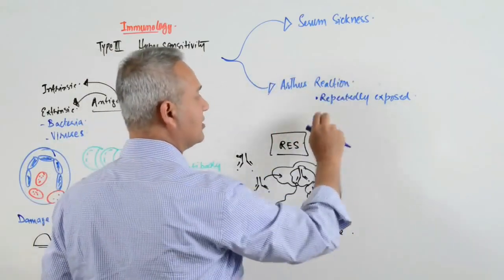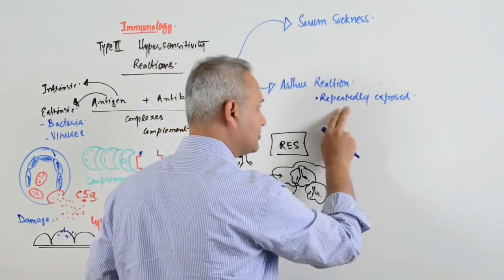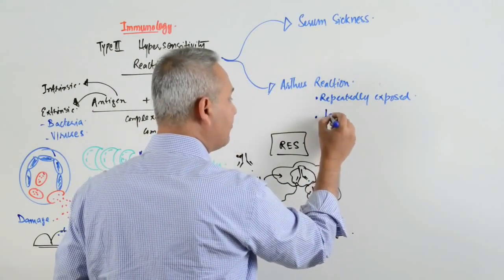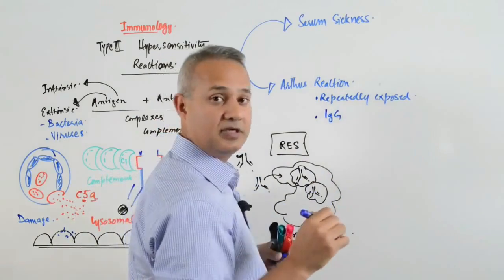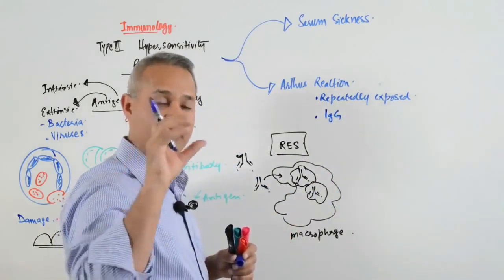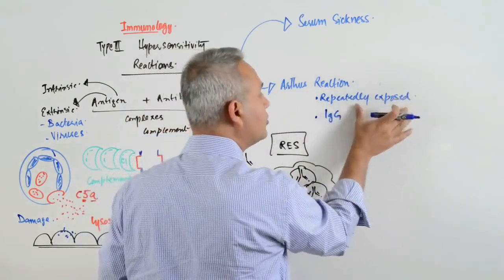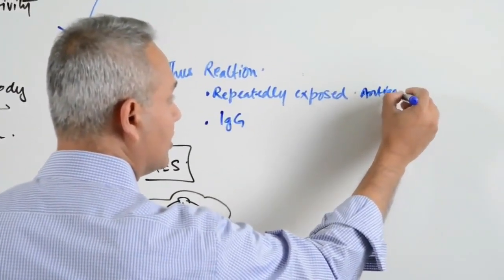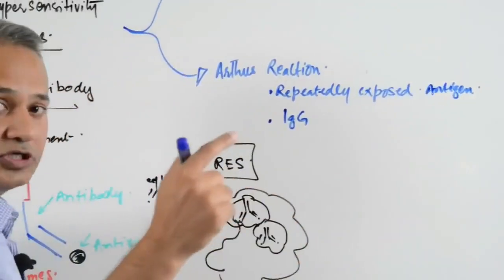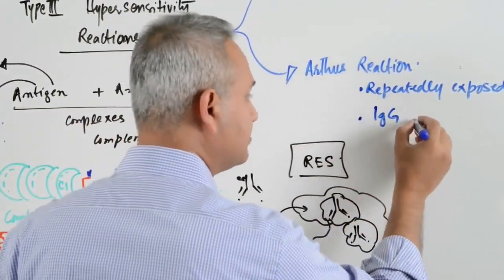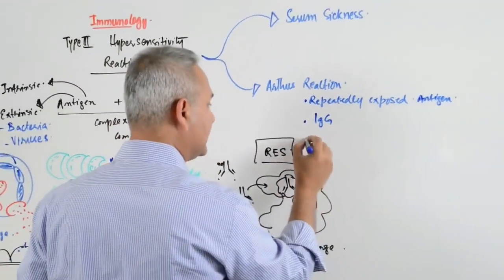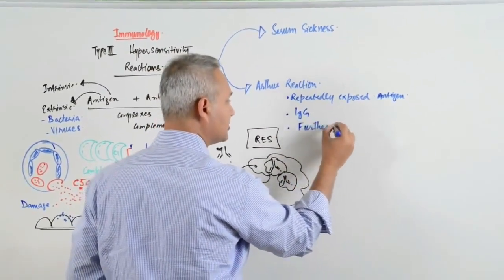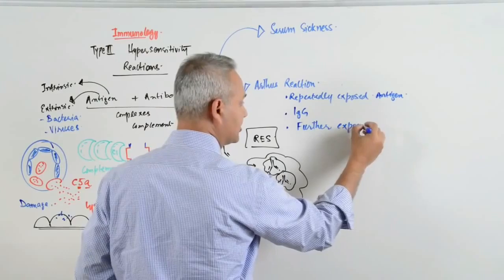In all those cases there needs to be repeated exposure. After that, enough IgG is developed against the exposed antigen. With further exposure, a reaction occurs.